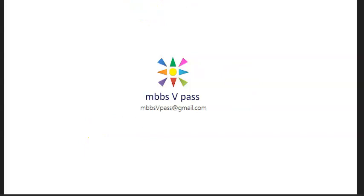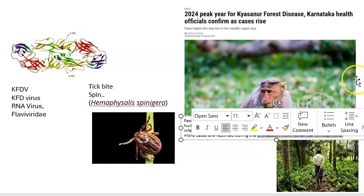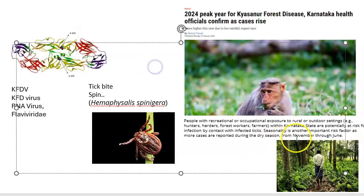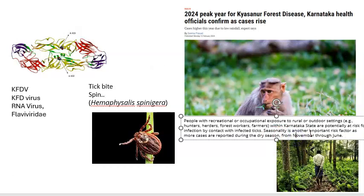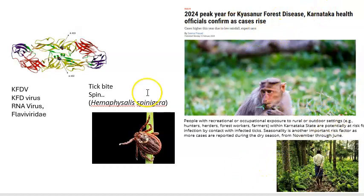In the dry season, from November through June, this disease increases in incidence. Currently being in February, we are within that dry season — which is exactly why news about rising Kyasanur Forest Disease cases is appearing now.